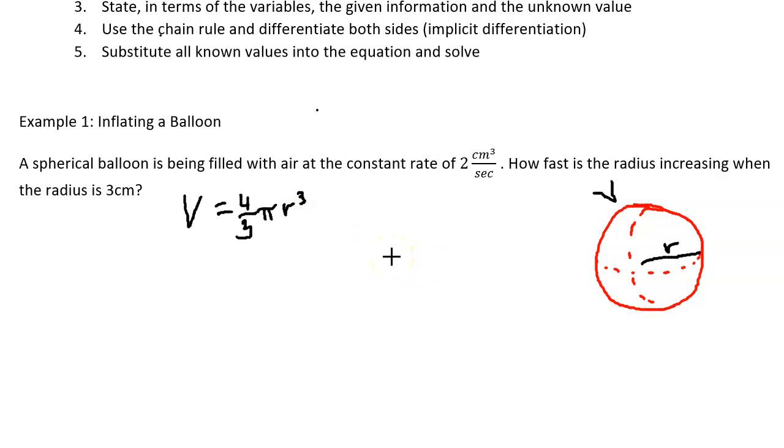Now we're going to go through this information and we see the first piece of given is that you have a constant rate of two centimeters cubed. Now rate tells us that we're talking about a derivative dv/dt, so with respect to time, seconds is a unit of time and then the question is how fast is the radius increasing when the radius is three centimeters.